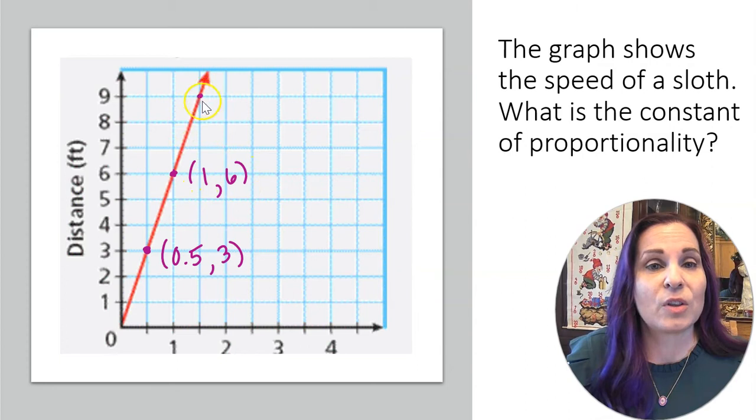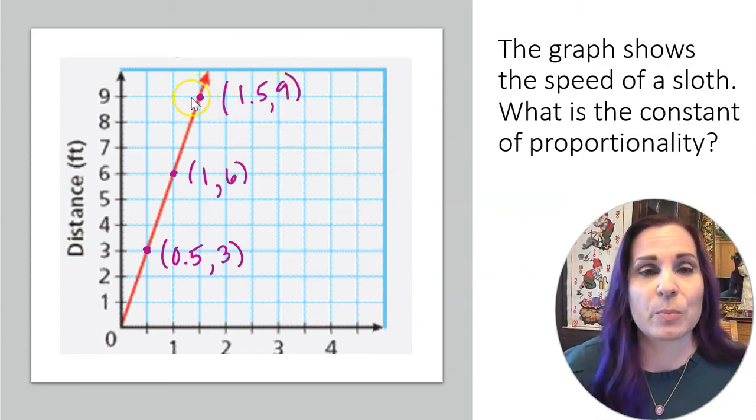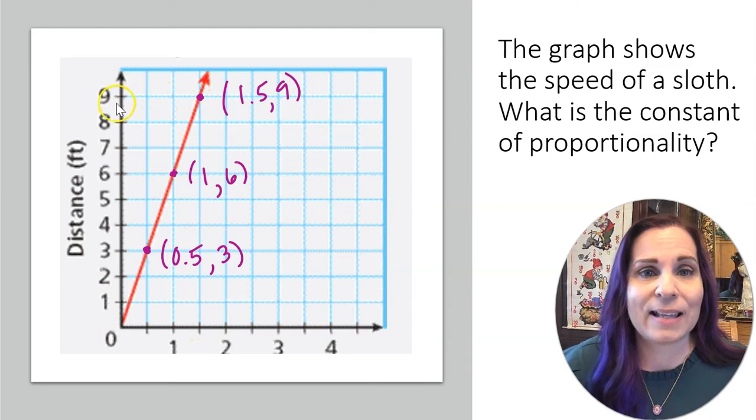And then there's another point here. That point is 1.5, 9. And if you don't see where I'm getting these numbers from, let's look at this point, for example. I'm following it straight down to the x-axis, and that's 1.5 because it's right between 1 and 2. And then I'm following it straight over to the y-axis, and that's 9. So that's where I get the point 1.5, 9.